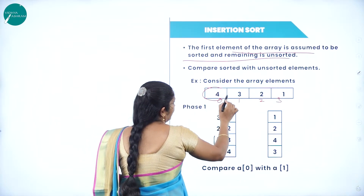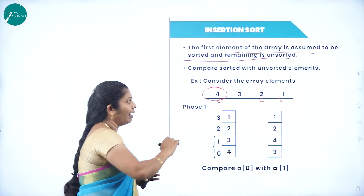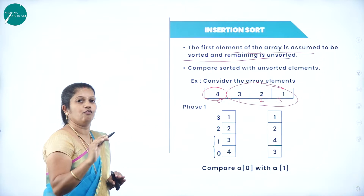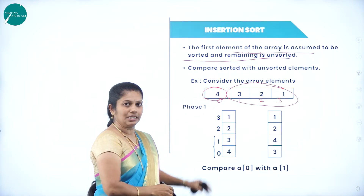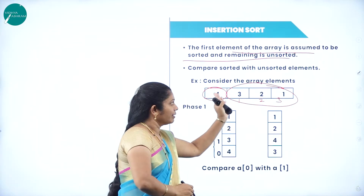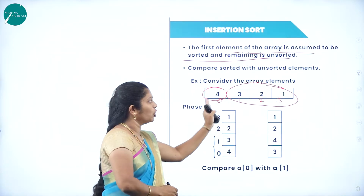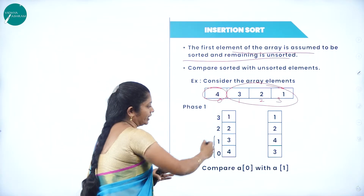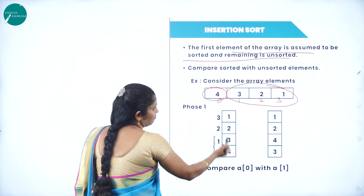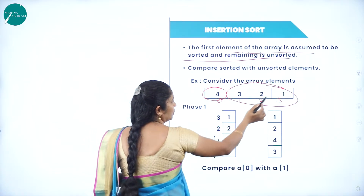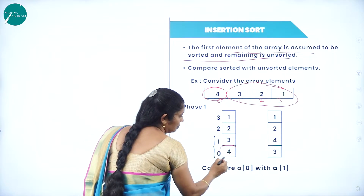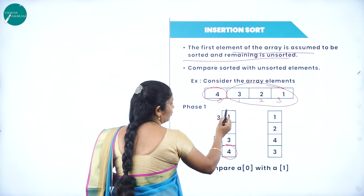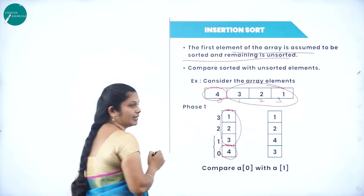We will assume the first element is the sorted element and the remaining elements are unsorted. To perform insertion sort, we assume that the first element is sorted and the remaining will be unsorted. The comparison takes place between sorted and unsorted elements. The remaining unsorted elements start from position 1 till the last one, N minus 1.